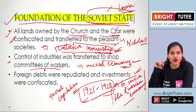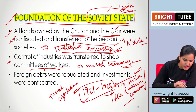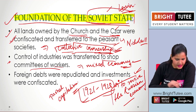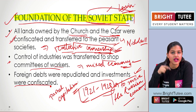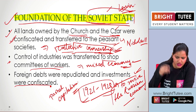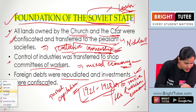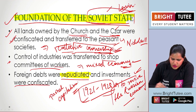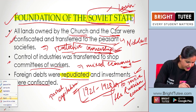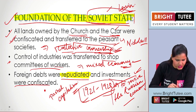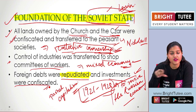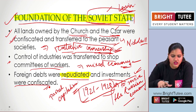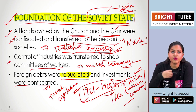Workers were not given profit solely as per their work. Foreign debts were repudiated and investments were confiscated. The loans that were there — they refused to accept them. The foreign investments were also taken back by the government. So a lot of changes were taking place in the Soviet state after the revolution.